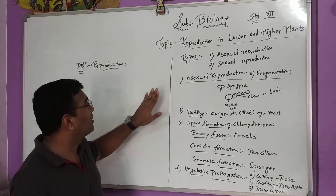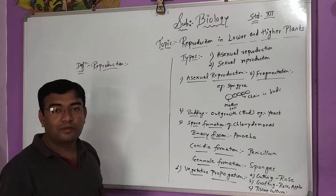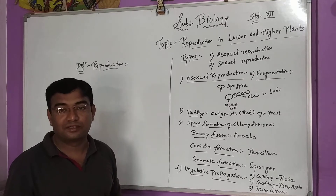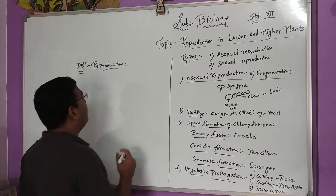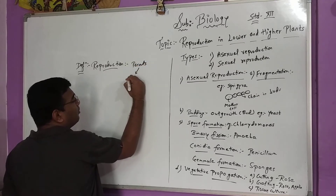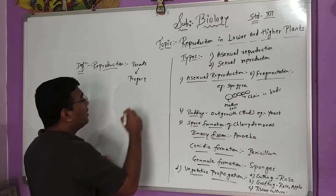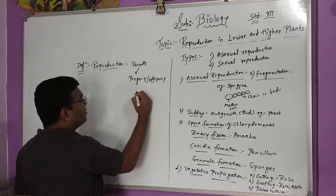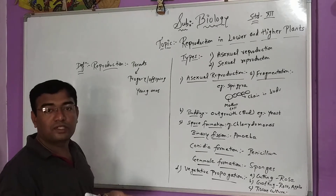Today our topic is reproduction, so we will start with the definition of reproduction. What is reproduction? Reproduction is nothing but the production of new species from the parents, or we can say the production of the young one from the parents. So reproduction means the parents develop the progeny. Progeny can also be called offspring or young ones, and they are developed from the same kind.